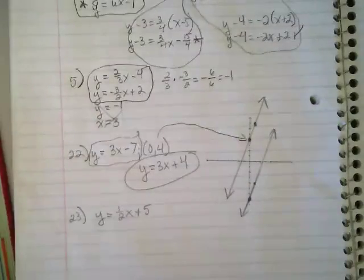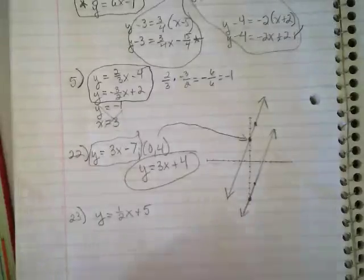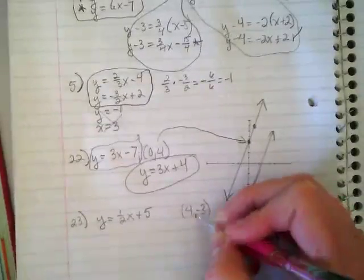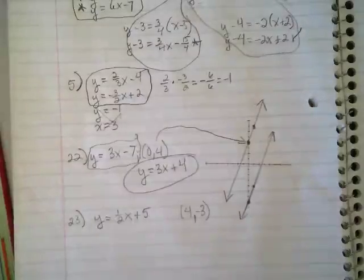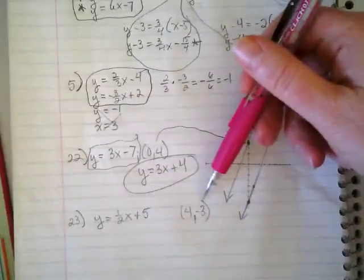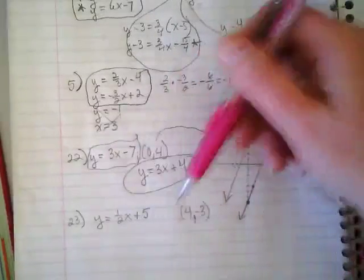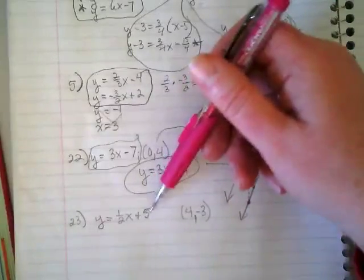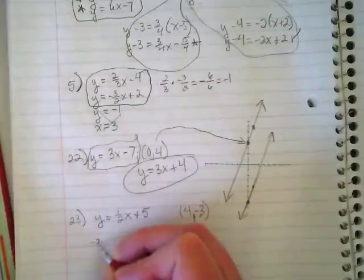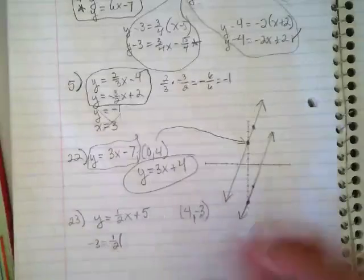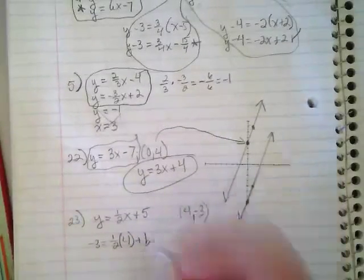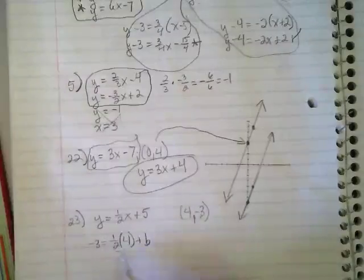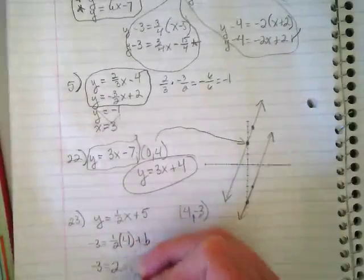Let's try 23. It says, and I don't even think you need to graph this to do this, y equals 1 half x plus 5. And we want to write a line that goes through 4, negative 3. And as always, there's a couple different ways to do this. One, you could graph it and make a point at 4, negative 3, and use 1 over 2 to find the line. The other way is I could rewrite this equation and put this x and y in and find the plus b. So if I rewrite this as y, negative 3 equals 1 half times this x plus b.